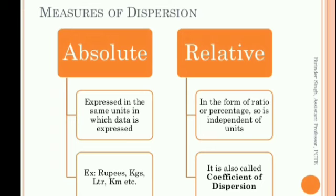Measures of Dispersion do tariqe se hoga: ek absolute hoga, aur ek hoga relative. Absolute mein kya karoge — jabhi bhi unit mein express hoga, toh woh absolute hoga. Aur relative mein matlab — jabhi bhi hum ratio form mein ya percentage form mein define kar rahe hain — that is my relative value. For example, rupees mein ho sakta hai, kg mein hoga, liter hoga, kilometer. Jab ratio ya percentage ki baat aati hai relative measure mein, toh it is also coefficient of dispersion — jaise ki coefficient of range, coefficient of quartal deviation, mean deviation.